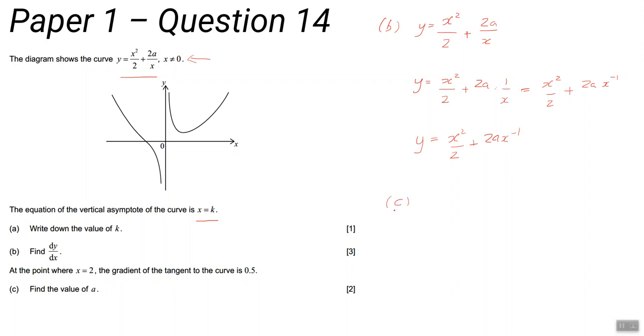Question c says find the value—it tells you when x is 2, the gradient of the tangent to the curve is 0.5, so dy by dx is 0.5. I'm not going to give away your answer, but once you've worked out what dy by dx is from part b, you put x equal to 2 and solve it to find a.